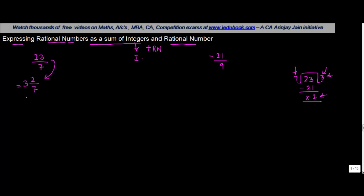Now if you recall, 3 and 2 by 7 means 3 and 2 upon 7, or in other words 3 plus 2 upon 7. What we have achieved here is: 3 is an integer and 2 upon 7 is a rational number.